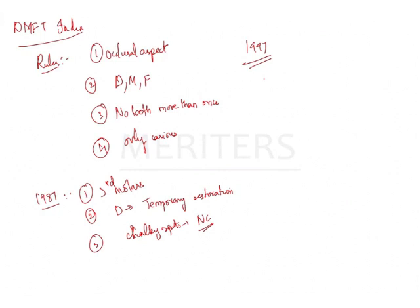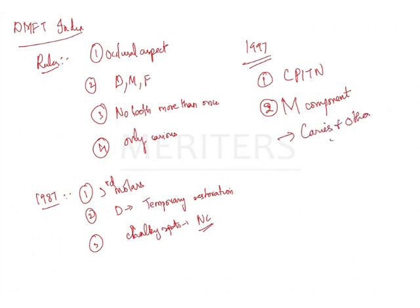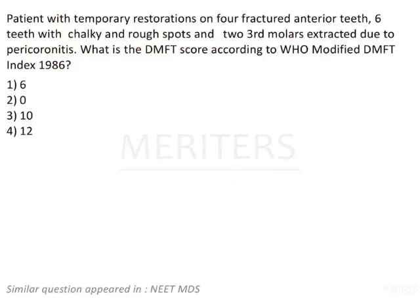For the 1997 modification: first, a CPI probe should be used to confirm evidence of caries — not a straight probe, but a CPI teen probe. Second, for individuals 30 years or older, the M component should include teeth missing due to caries or any other reasons. Third, for individuals younger than 30 years, the M component should include only caries. So in total you have 6 basic rules, 3 from 1987 and 3 from 1997.